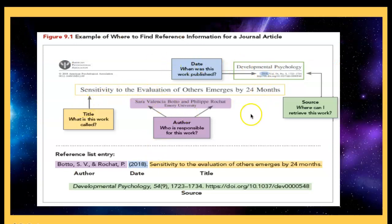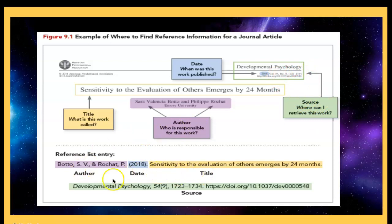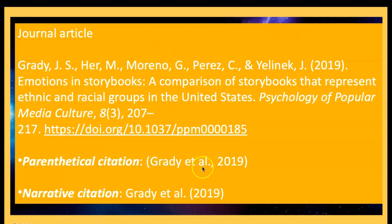The title is the title of your book or article — whatever you were discussing. Then author is the name of the person who wrote it, date is when it was published, and source is where you got it from. This is basically how a source entry looks: author's name, date, title, and source.